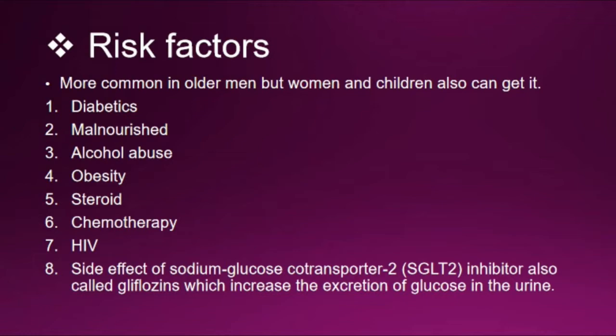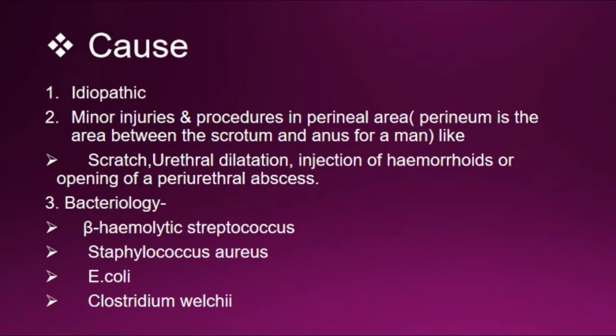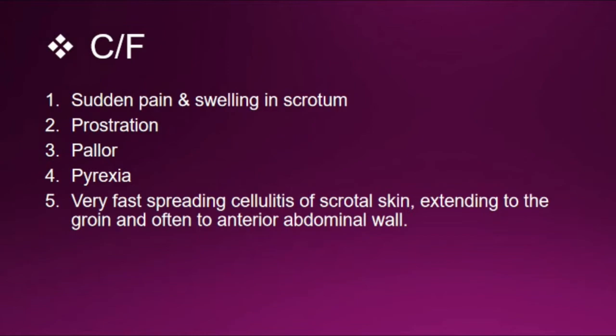Causes include idiopathic, minor injuries, and procedures in the perianal area. The perineum is the area between the scrotum and anus in men. Examples include scratching, urethral dilatation, injection of hemorrhoids, or opening of a periurethral abscess. Bacteriology includes beta-hemolytic streptococcus, Staphylococcus aureus, E. coli, and Clostridium species.